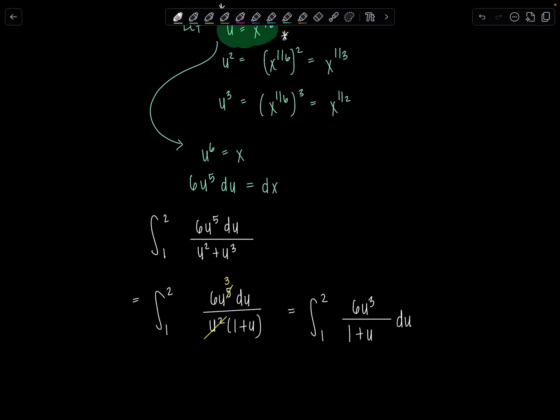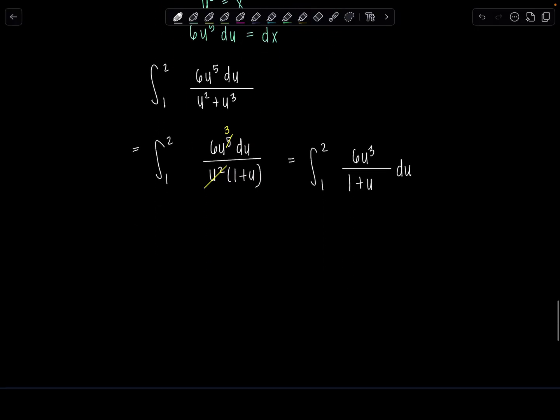What do you do from here? So we've got 6u cubed in the top, 1 plus u in the denominator. Let me take the 6 out. Maybe that'll help you feel less stressed about the whole thing. When those constants leave the integral and they're outside and you can just focus on what's going on, everyone usually feels a lot better.